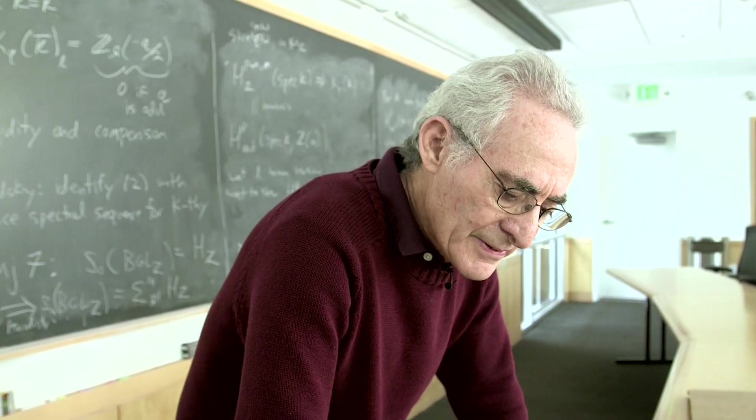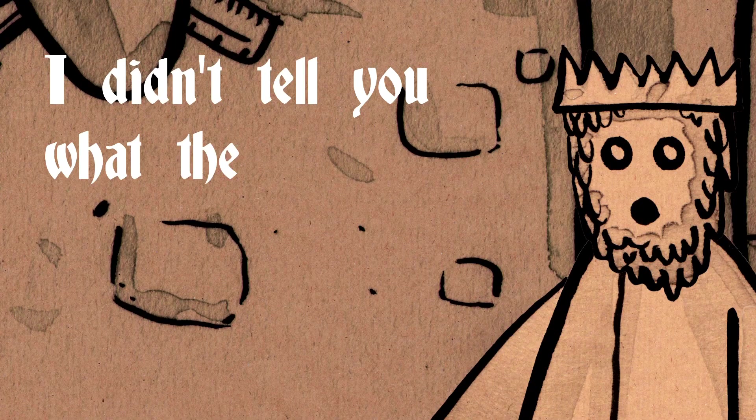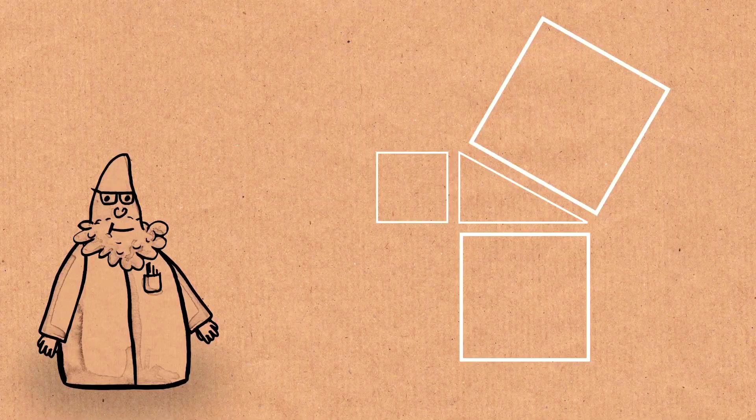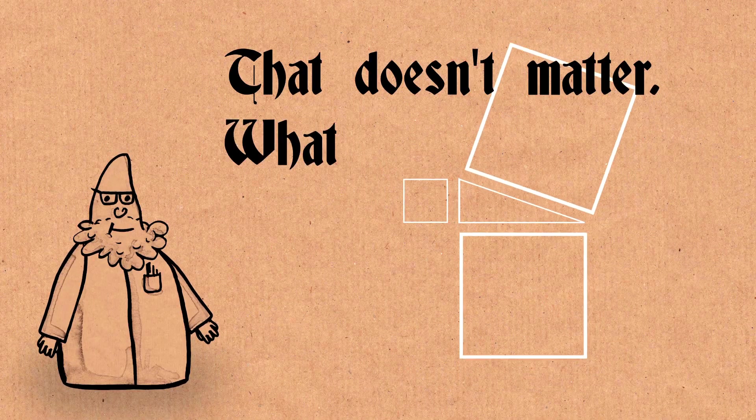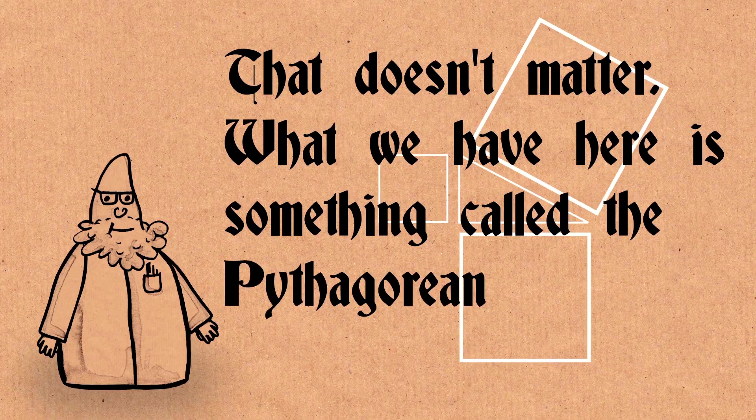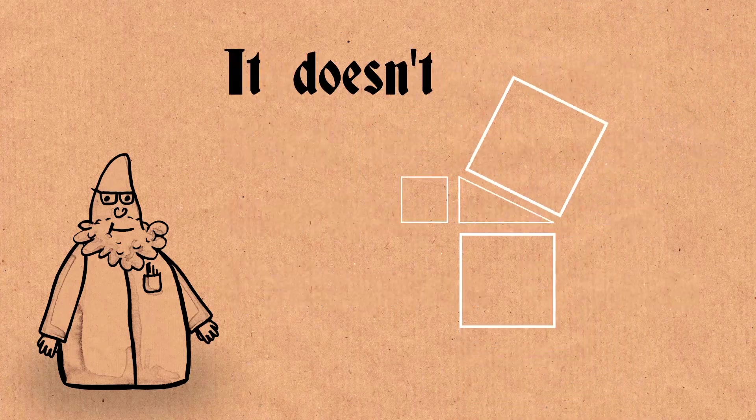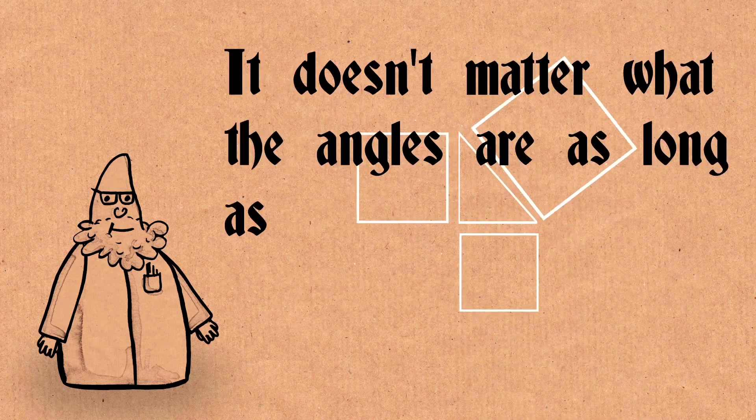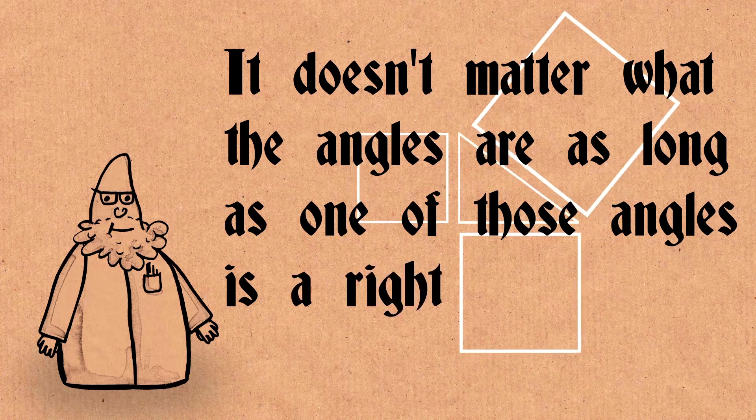But even before he leaves the room, he says, but I didn't tell you what the angles of the triangle. Counselor says, that doesn't matter. What we have here is something called the Pythagorean theorem. It doesn't matter what the angles are, as long as one of those angles is a right angle.